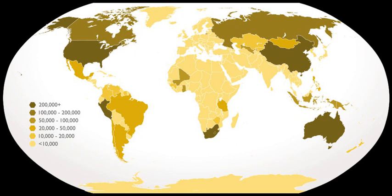All these steps failed to yield the desired result. Desai finally introduced the Gold Control Act on 24 August 1968, which prohibited citizens from owning gold in the form of bars and coins. All existing holdings of gold coins and bars had to be converted to jewellery and declared to the authorities. Goldsmiths were not allowed to own more than 100 grams of gold, and licensed dealers were not supposed to own more than 2 kilograms of gold, depending upon the number of artisans employed by them. They were banned from trading with each other.